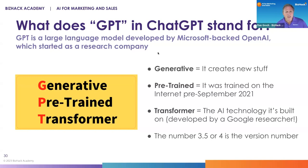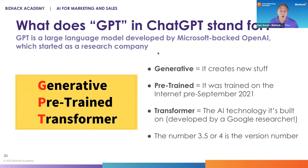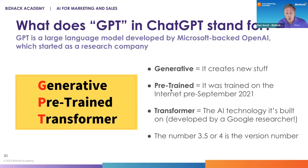Transformer is an artificial intelligence technology that these large language models are built on. It was originally developed by a Google researcher — ironically — although OpenAI and Microsoft are now the main competitors in AI with Google. The number 3.5 is like the version number: 3.5 is version 3.5 and 4 is the new upgraded number.